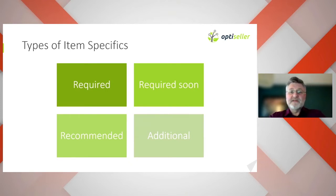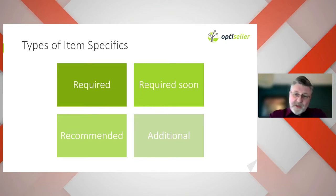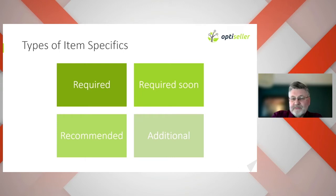There are four types of item specifics. Required — these must be completed to be able to publish or update your listings. Required soon — these will be newly required soon, so best advice is to complete them now. Recommended — optional, but frequently used in filters by buyers. And additional — optional, not as frequently used, but could still give you the edge. The required and required soon are mandatory — this is just to get your listings to the bare minimum eBay requires. But do consider going above and beyond this. Complete all item specifics where applicable, as they greatly improve your search visibility and will reduce the risk of being filtered out in search results.